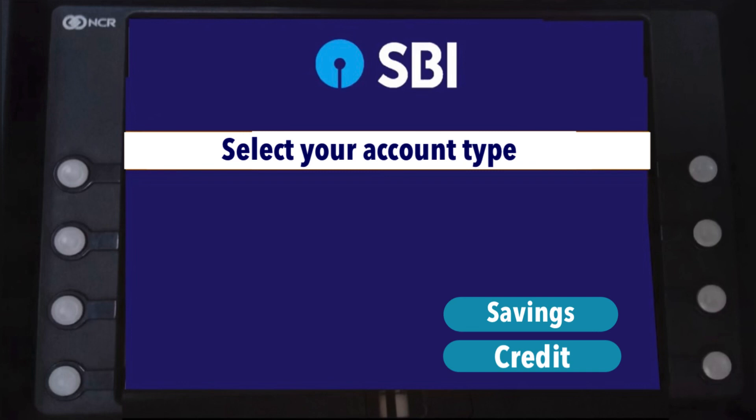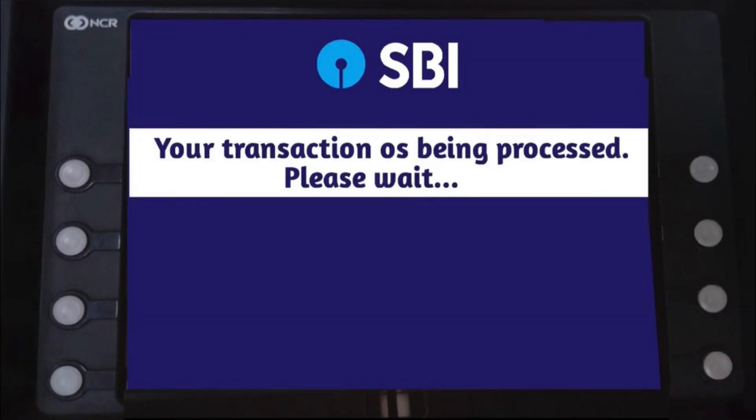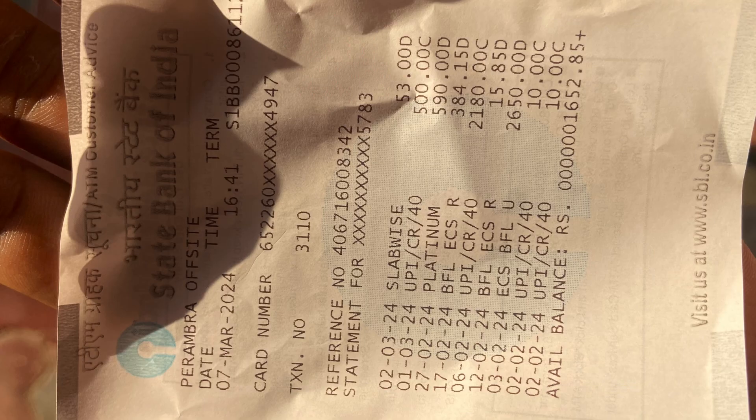If you are interested in any savings, you can take it via the API. You will be able to launch this online transaction. This is the last mini-state event. That is why there is a receipt in our ATM machine.